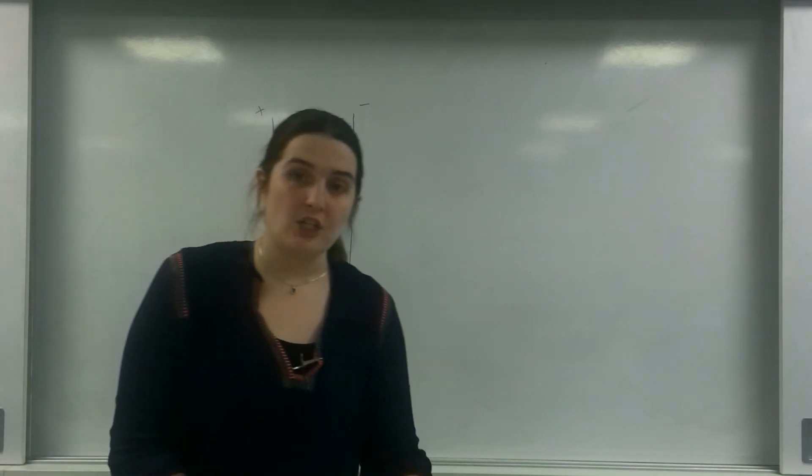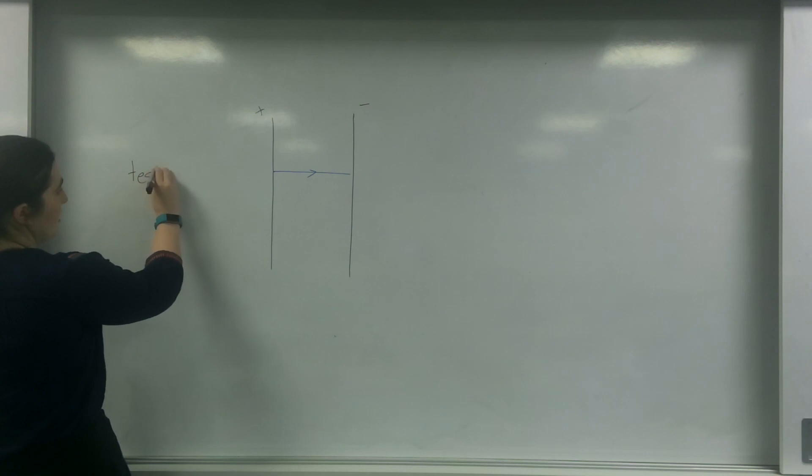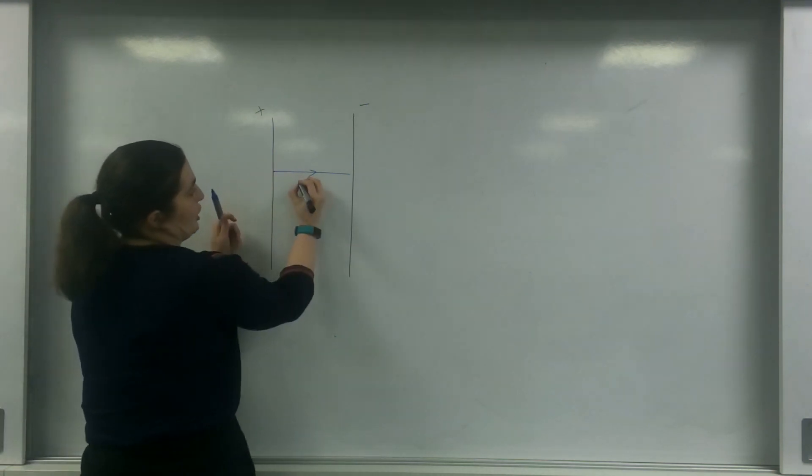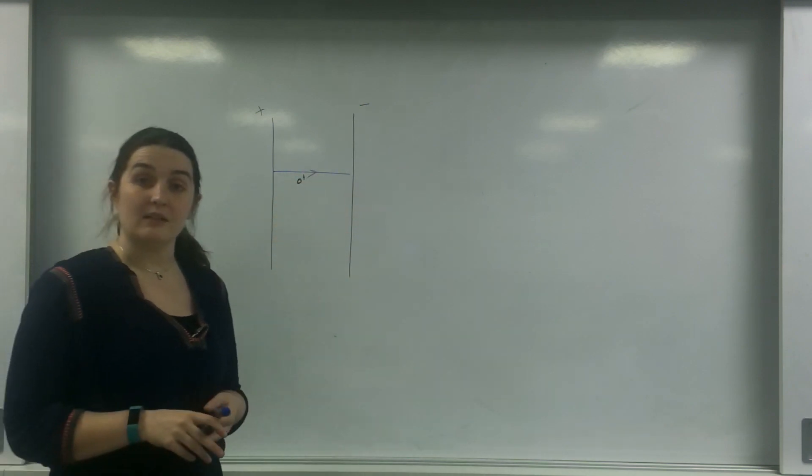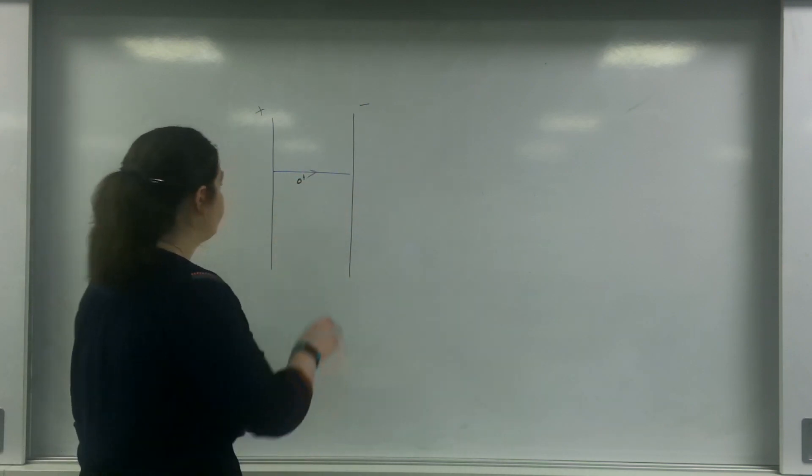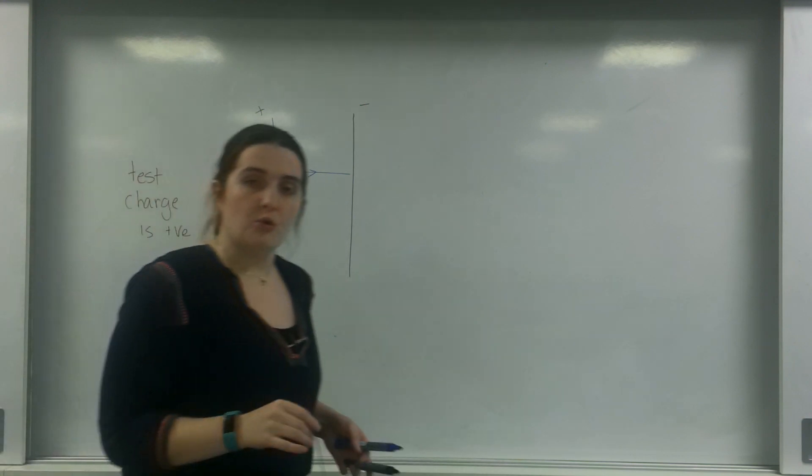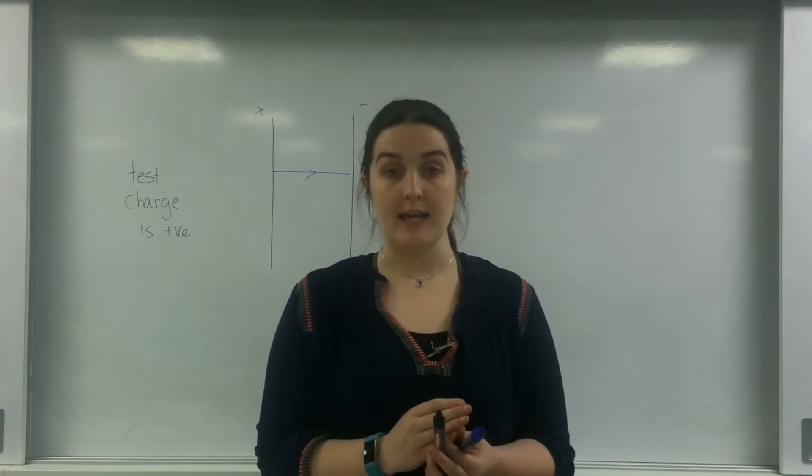The reason it is this direction is because our test charge is positive. This is the direction a positive test charge would go in that field. We always draw our arrows going from positive to negative.